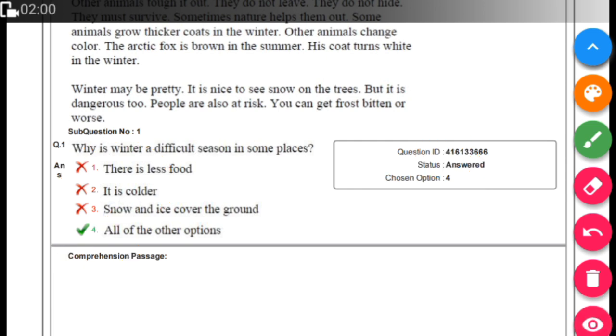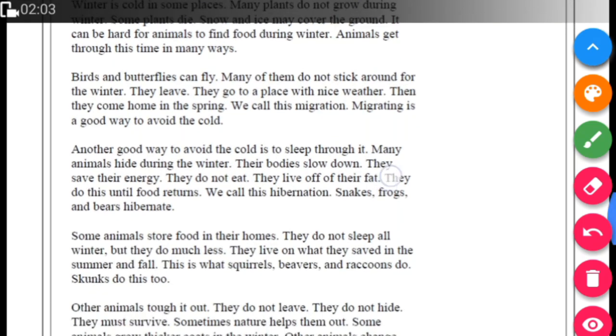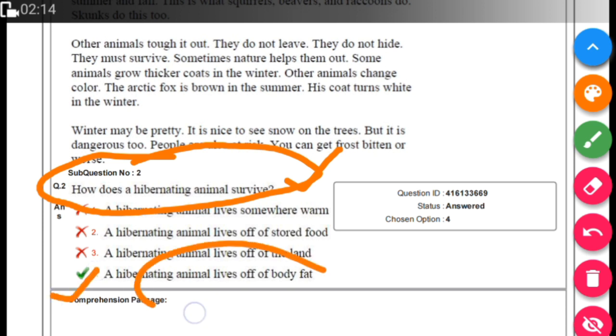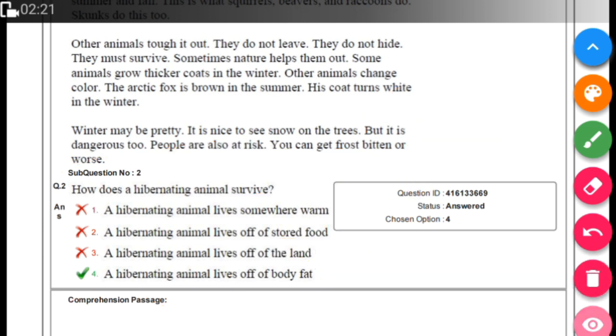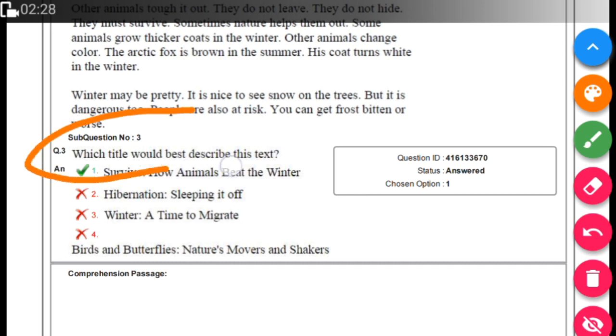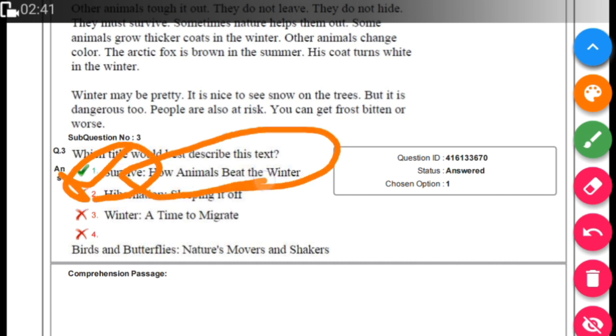Then go forward. The unseen passage has 5 questions total. Here we see the question: how do hibernating animals survive? The correct option is that hibernating animals live off their body fat, like bears that have fat for winter survival. The next question from the same passage asks which title would best describe this text. The answer is simply 'How Animals Beat the Winter,' as we've discussed about bears having fat and living in the poles.